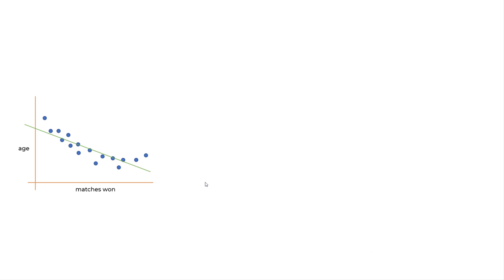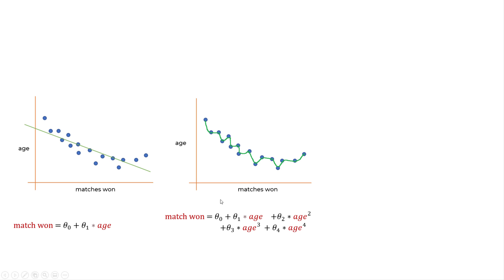Let's say you're trying to predict the number of matches won based on age. Usually when a player gets older, the matches won kind of reduces, so you can have this kind of distribution. To build a model you can create a simple linear regression model, and the equation might look like: matches_won = theta_0 + theta_1 * age. But you see this line is not really accurately describing all the data points — it's trying to find a best-fit straight line, but all these data points are going away from it, so if you have test data points lying somewhere else this is not a very accurate representation.